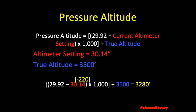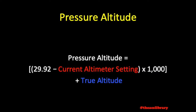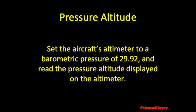That's really all there is to it. As long as you can find your altimeter setting and true altitude and plug them into this formula, you can calculate pressure altitude. A shortcut would be to set the aircraft's altimeter to a barometric pressure of 29.92 and read the pressure altitude displayed on the altimeter.